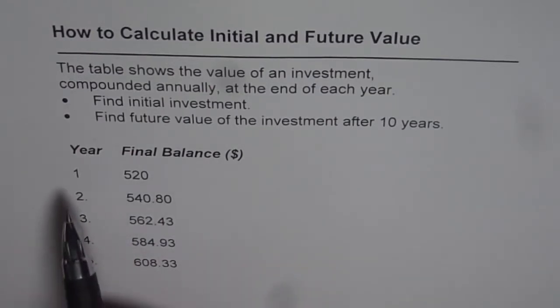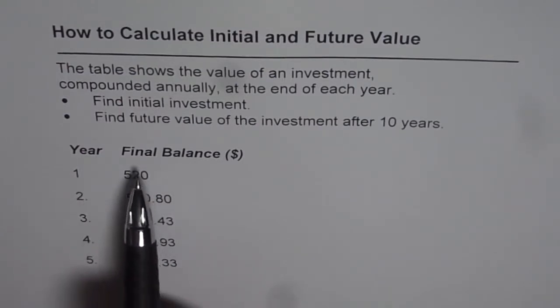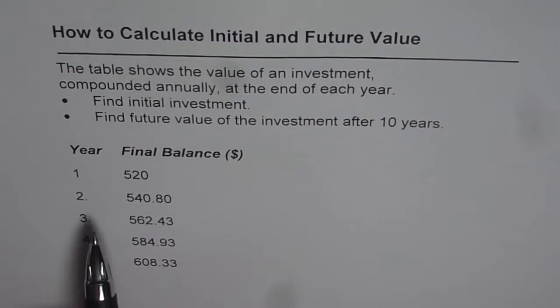So here is the table, these are the years 1, 2, 3, 4, 5 and at the end of each year we know the final balance which is 520 at the end of first year, 540.80 at the end of second year, 562.43 at the end of third year, 584.93 at the end of fourth year and 608.33 at the end of five years.